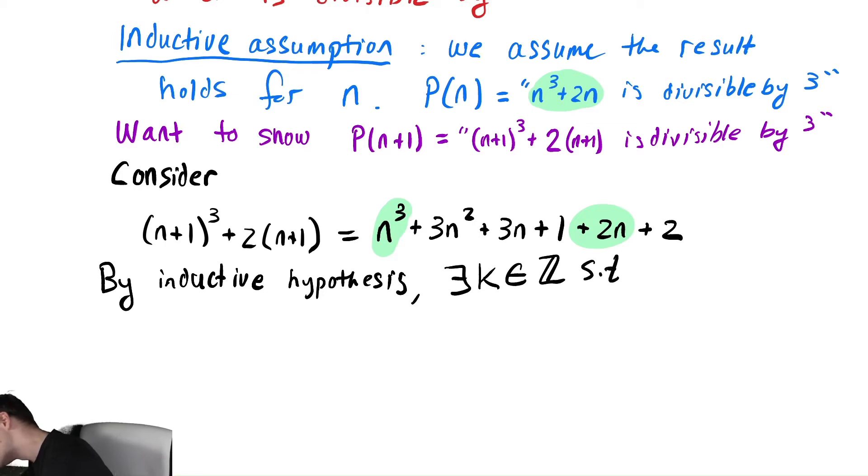such that n³ + 2n is equal to 3 times k. Just like we saw even numbers before for being divisible by a number that's not just 2. It's the exact same thing. It's 3 times that number.